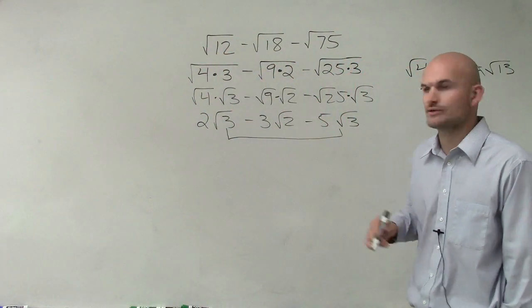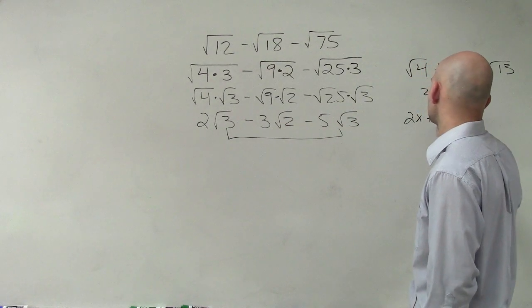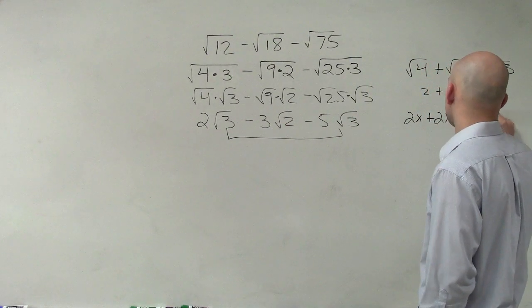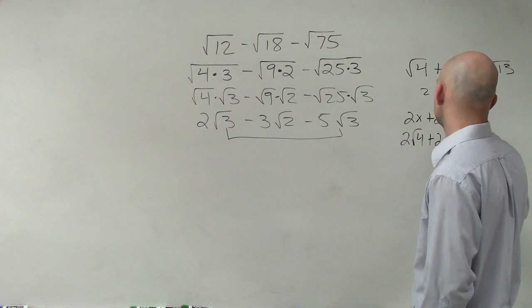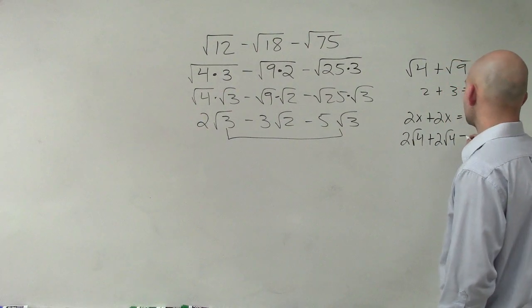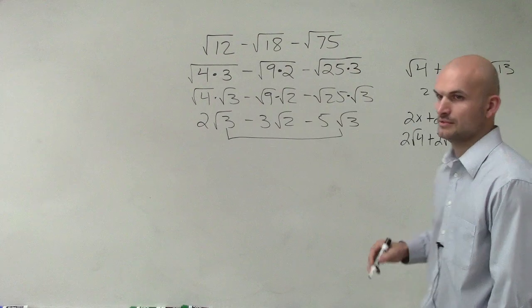And when you combine them, you just add them up like you would with x's. If I said 2x plus 2x, that equals 4x. 2 square root of 4 plus 2 square root of 4, that's going to equal 4 square root of 4, right?